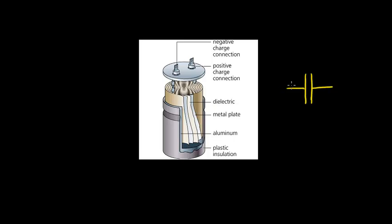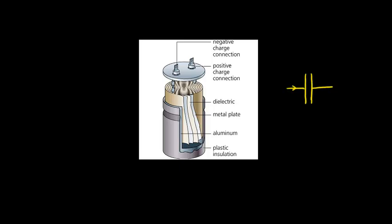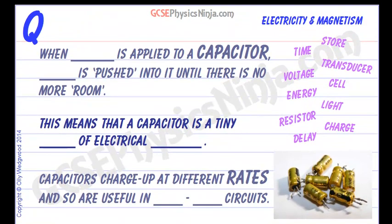This allows us to push charge onto the capacitor and store the charge on those plates. So when voltage is applied to a capacitor, that's a kind of electrical pressure which causes a charge to flow if there is a circuit.